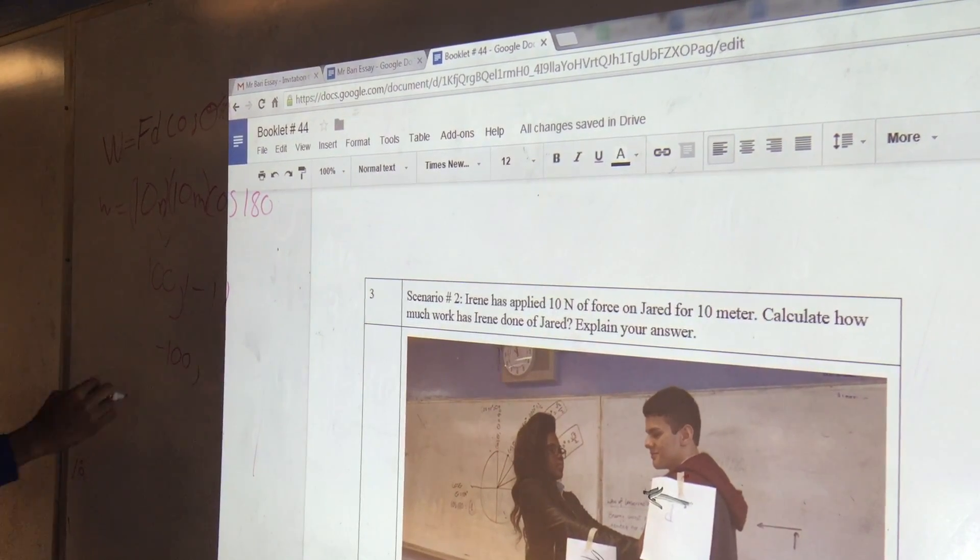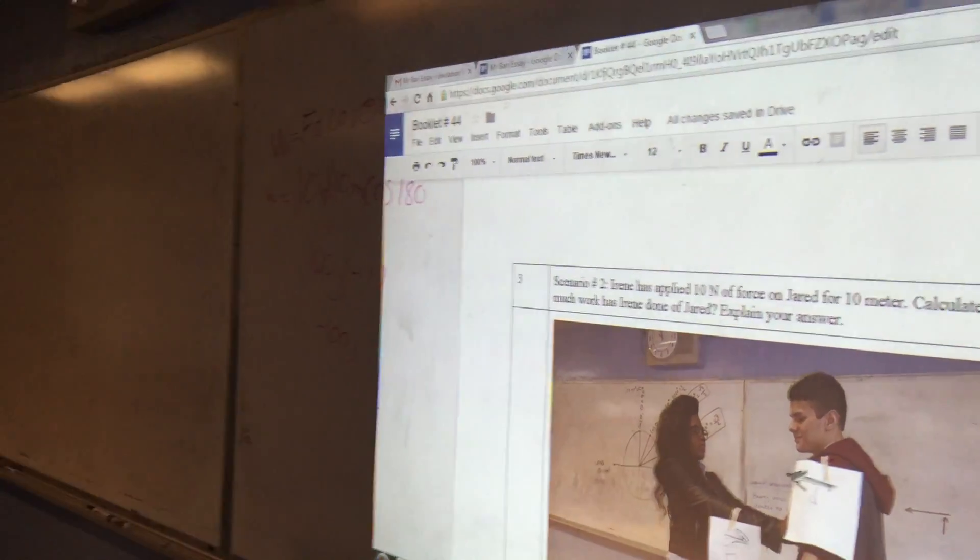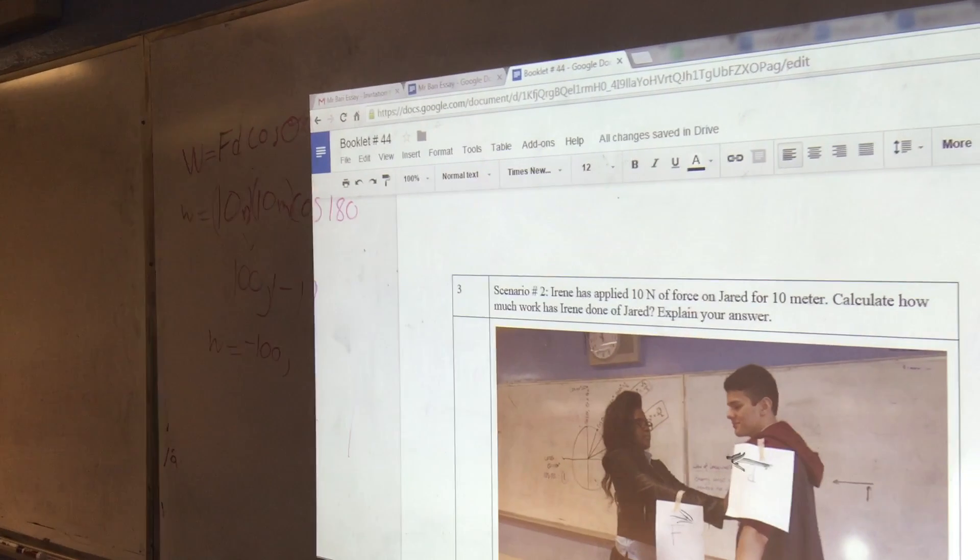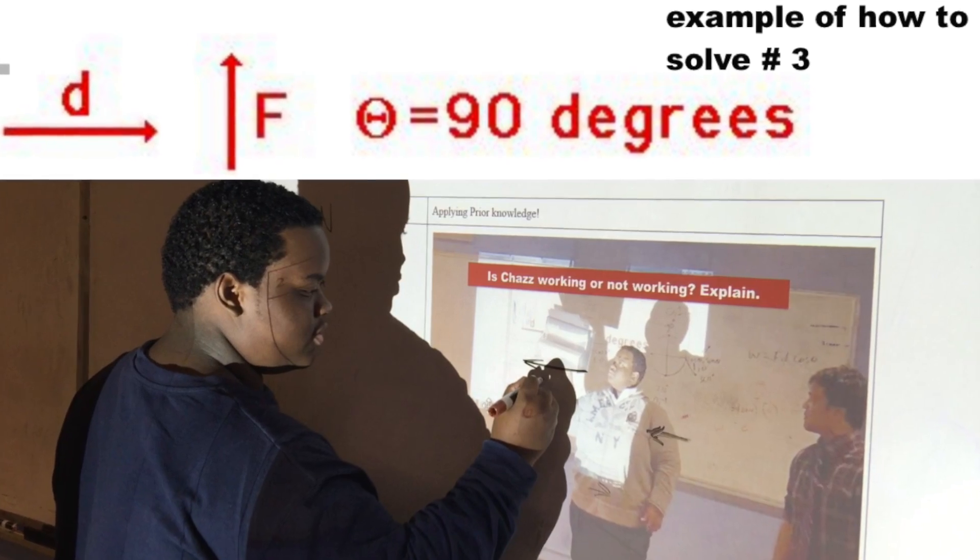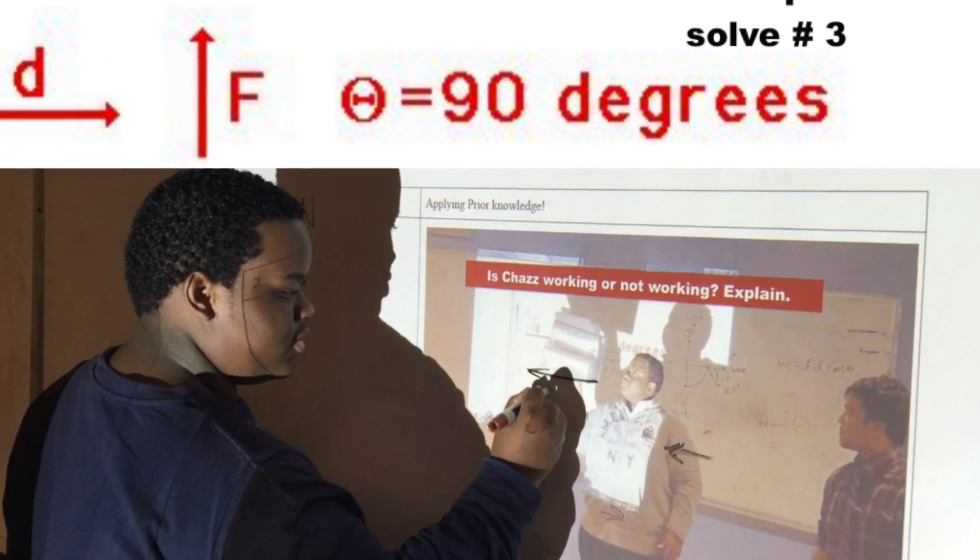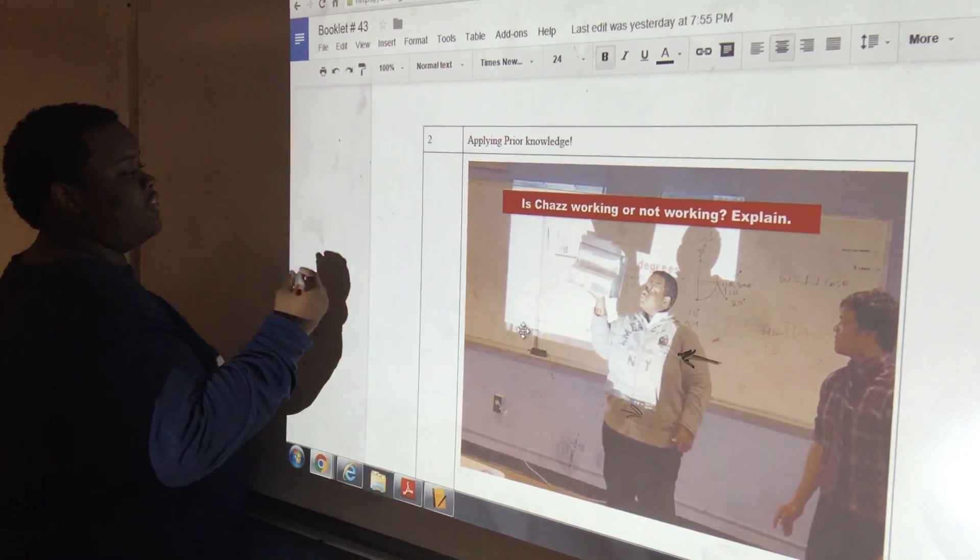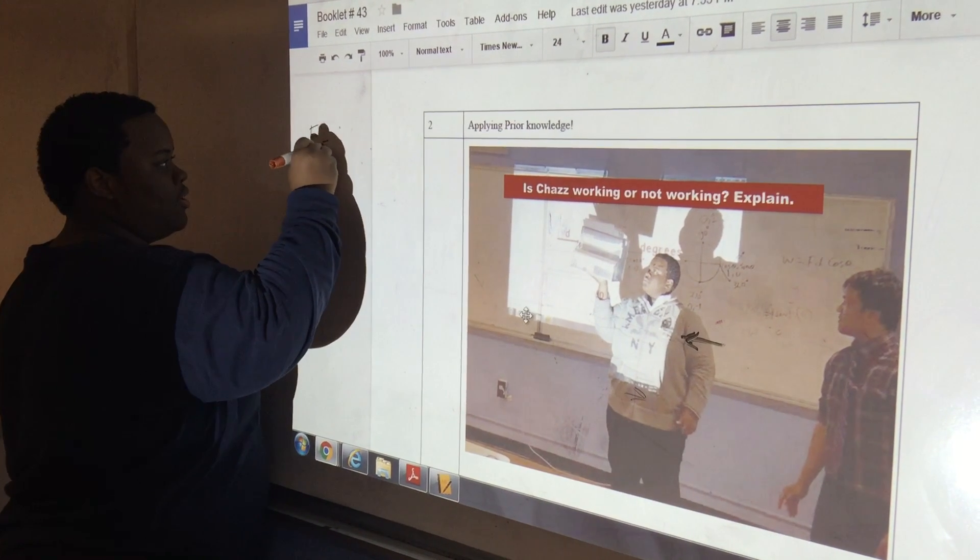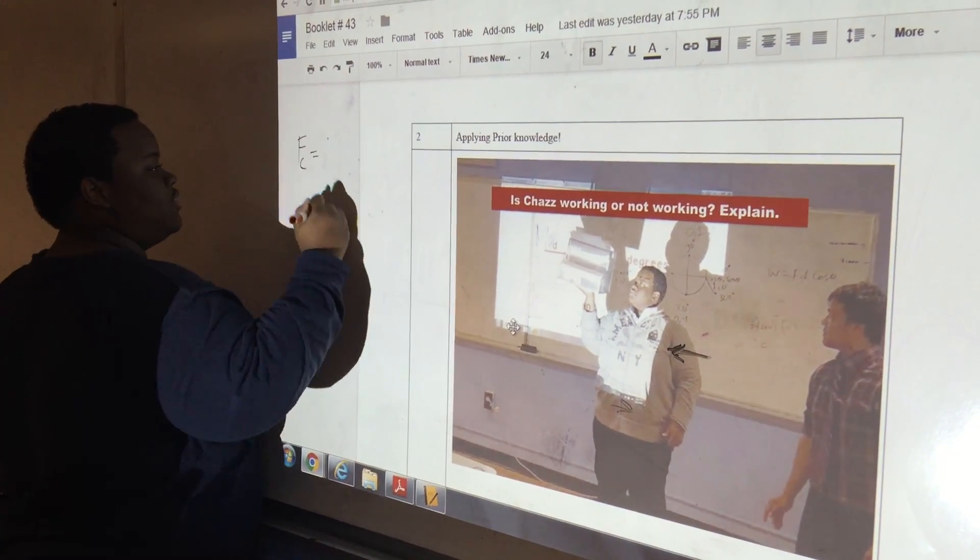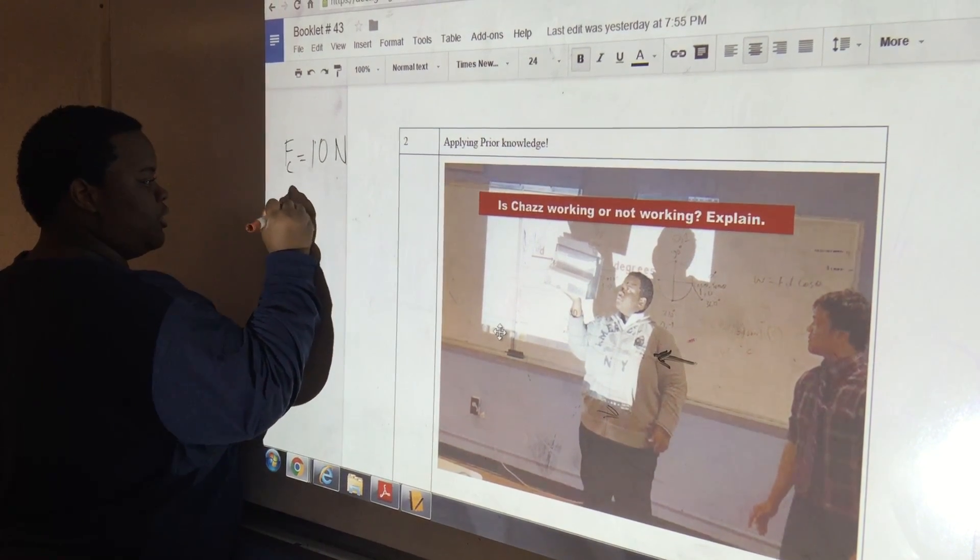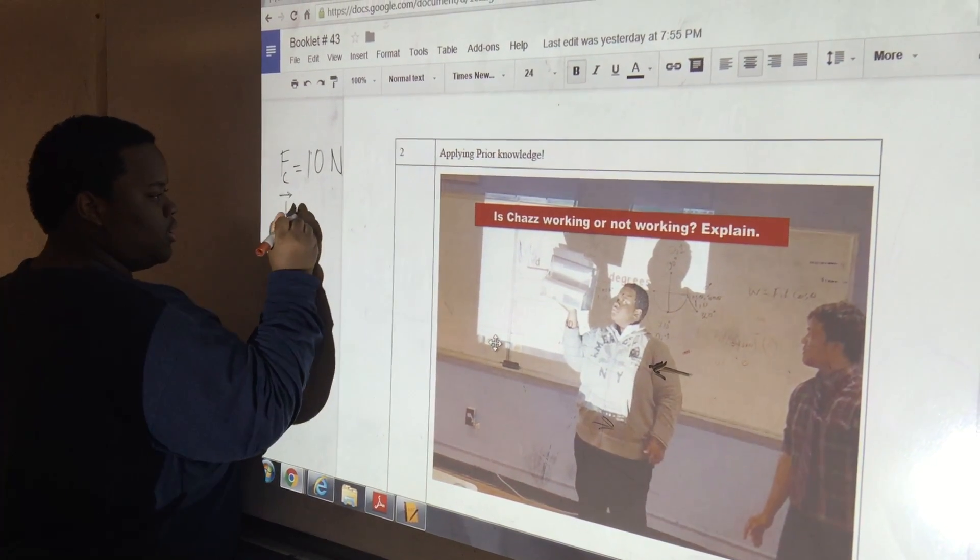Scenario 3: So what we know so far is that the force of Chas is 10 newtons and the displacement is 5 meters.